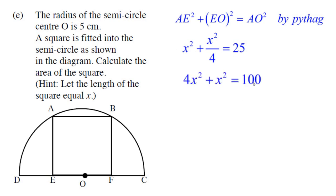And then multiply everything by 4, we'd get 4X squared plus X squared. The 4s would cancel. 4 times 25 is 100.